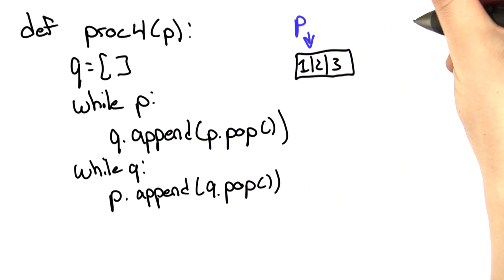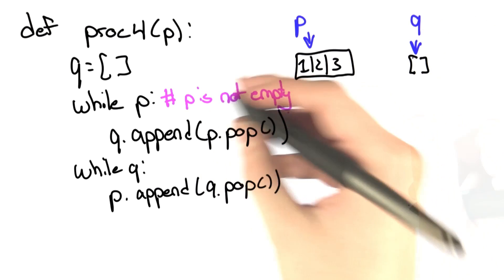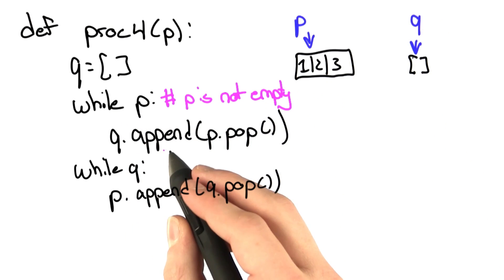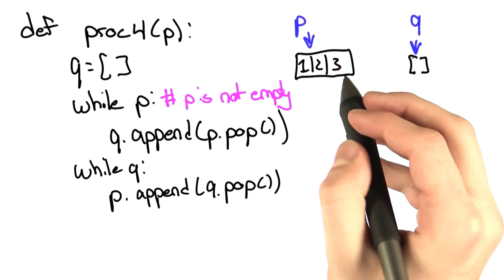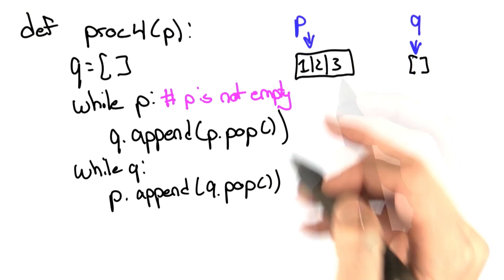Here, we create a new list called q, which is an empty list. There's nothing there. Then while p is not empty, we append on the q what we pop from p. If you remember, the pop is going to take the last entry in p and return it.